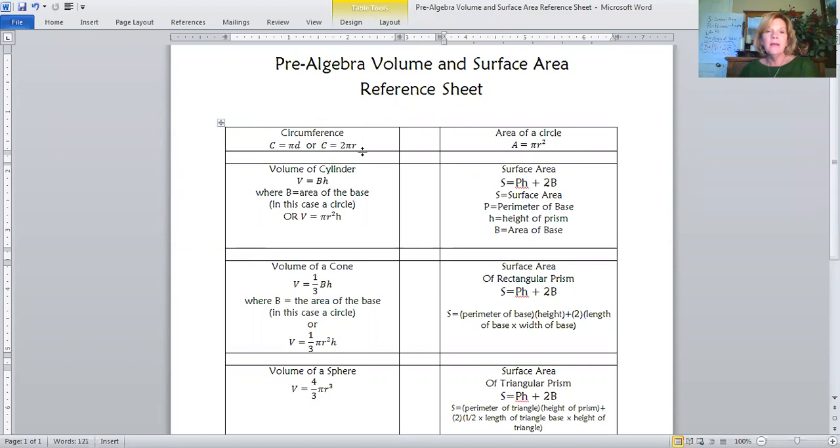We began remembering how to calculate circumference. We said circumference is equal to pi times the diameter of a circle. And we know that 2 radii equals the diameter. So this is the formula that we most often use. Circumference equals 2 pi r. We also remembered how to calculate the area of a circle. We said area was pi r squared.